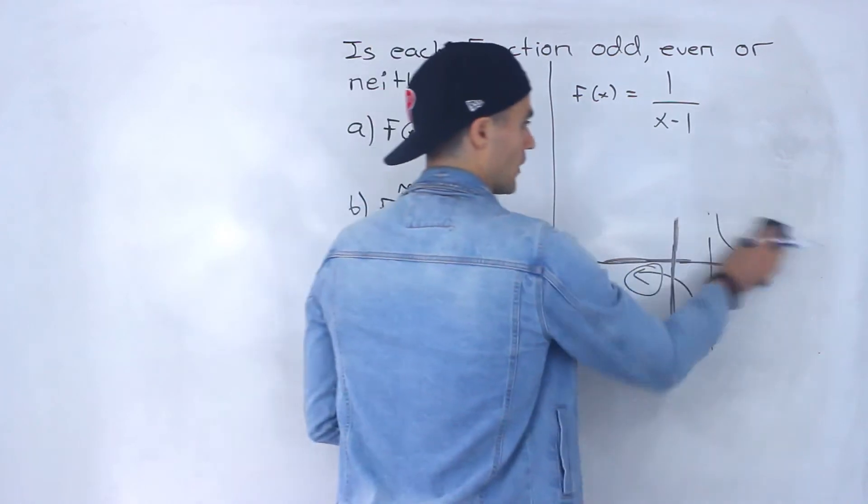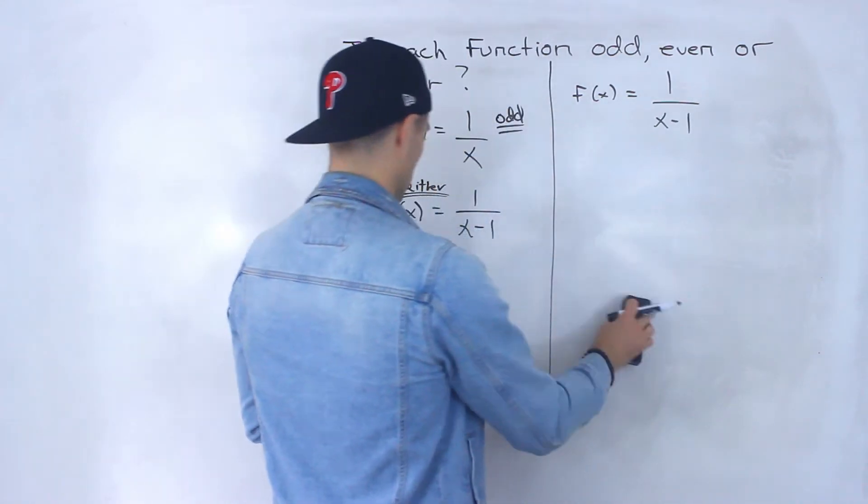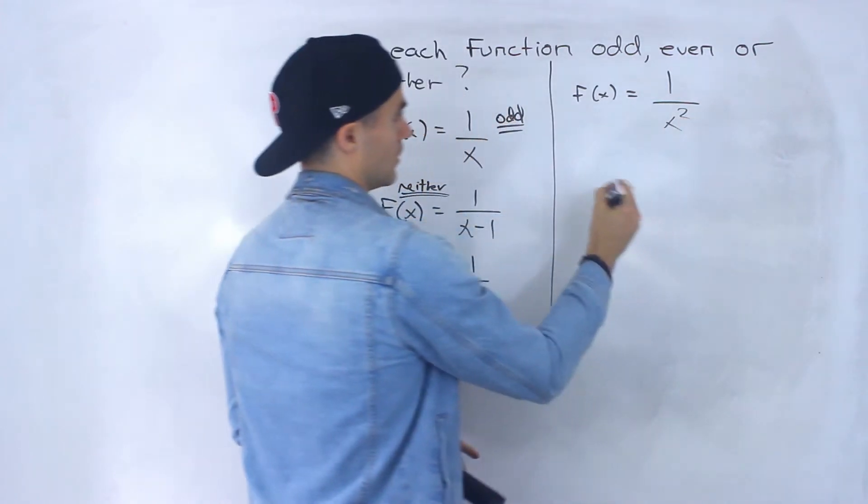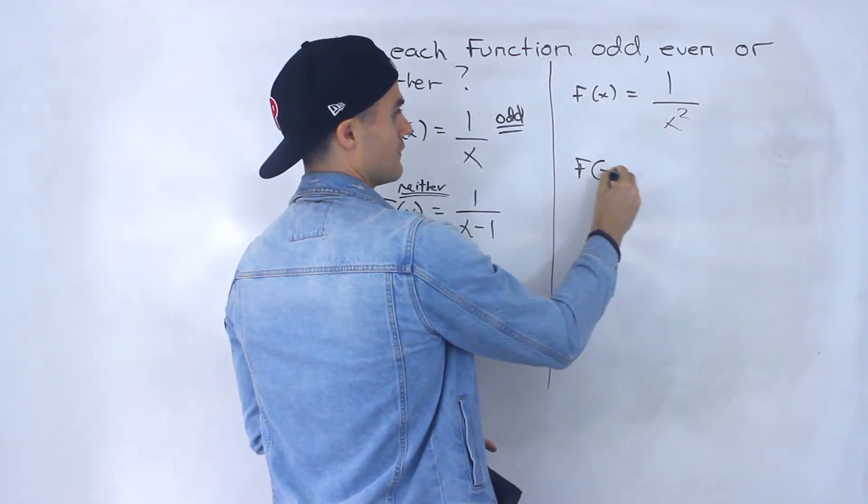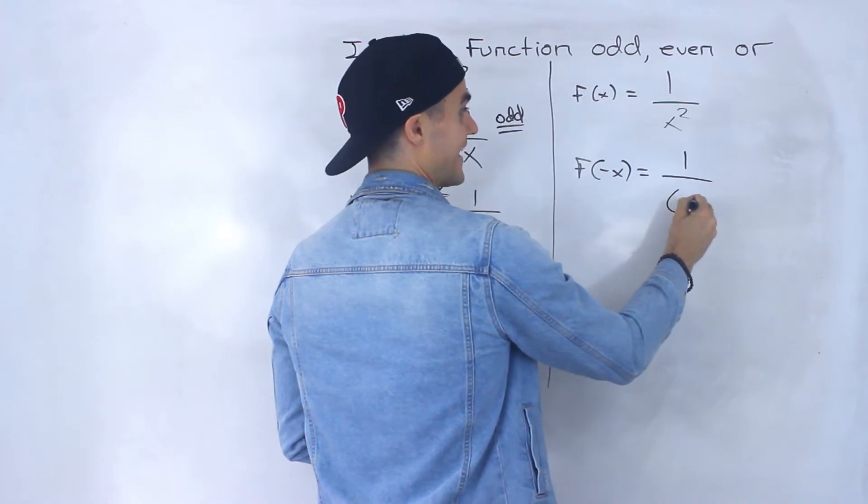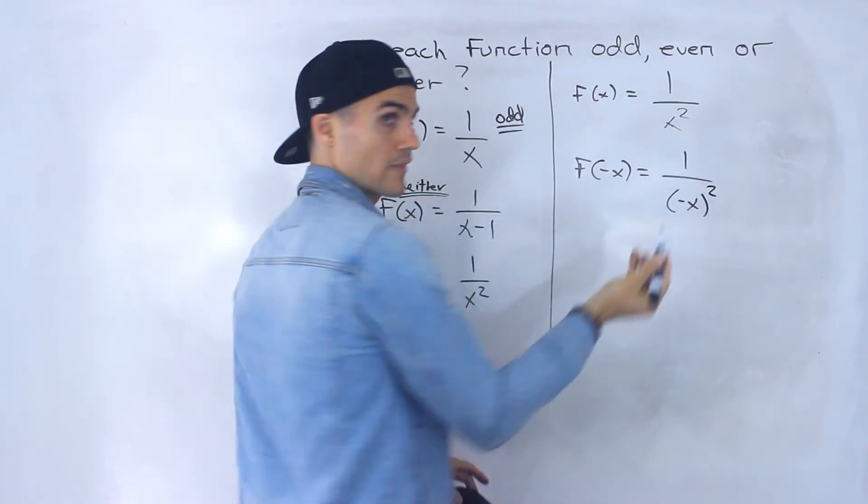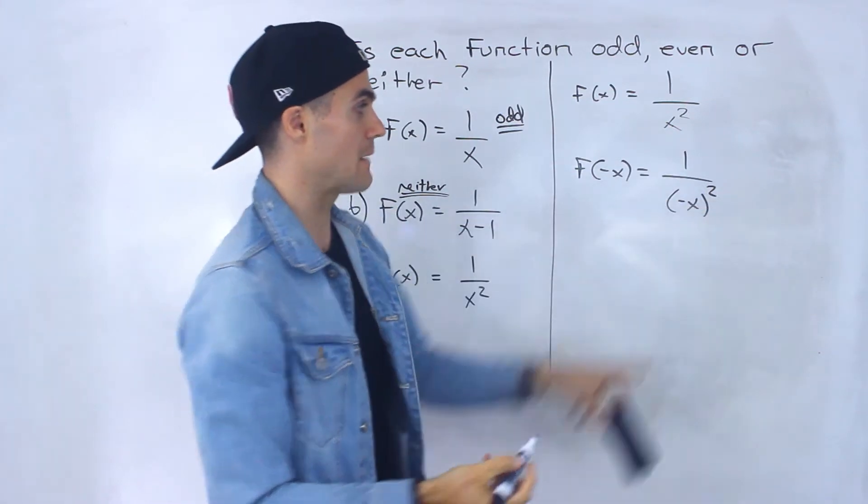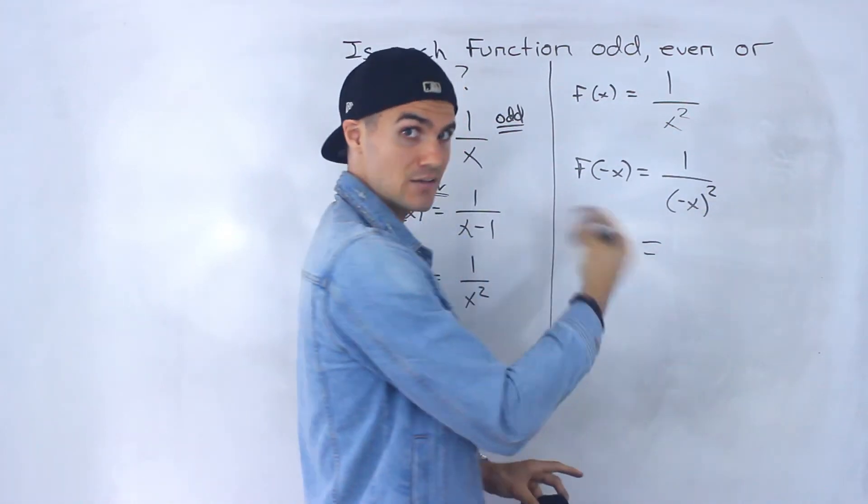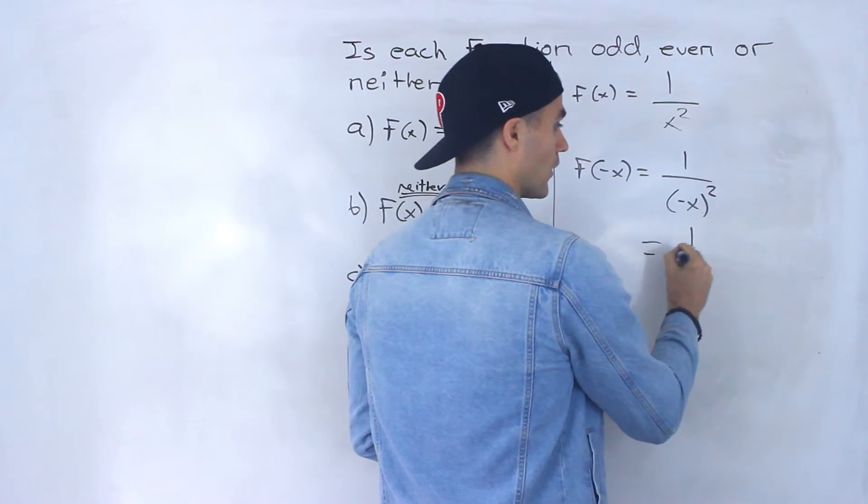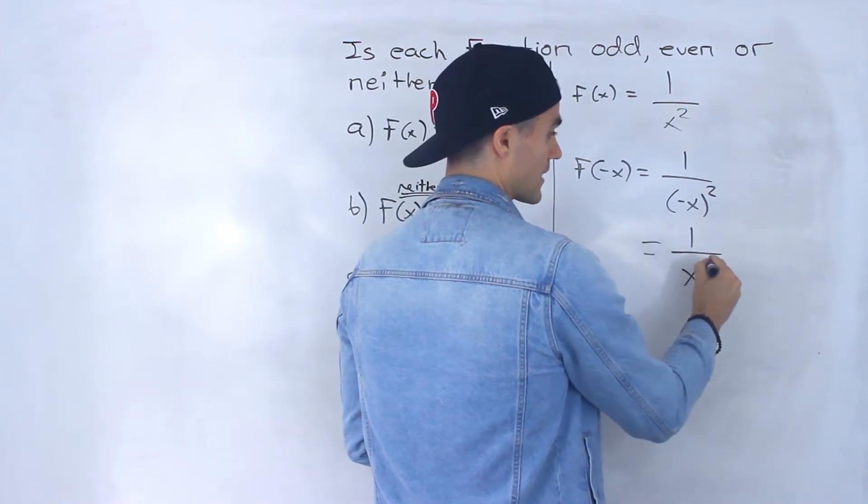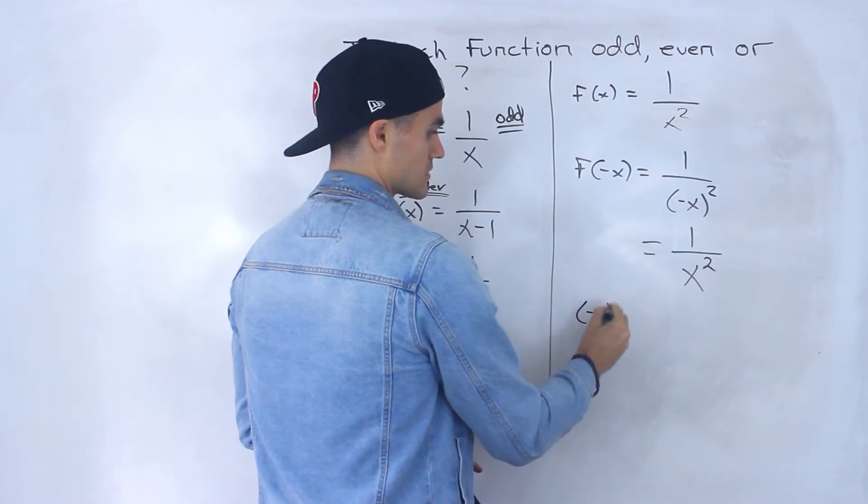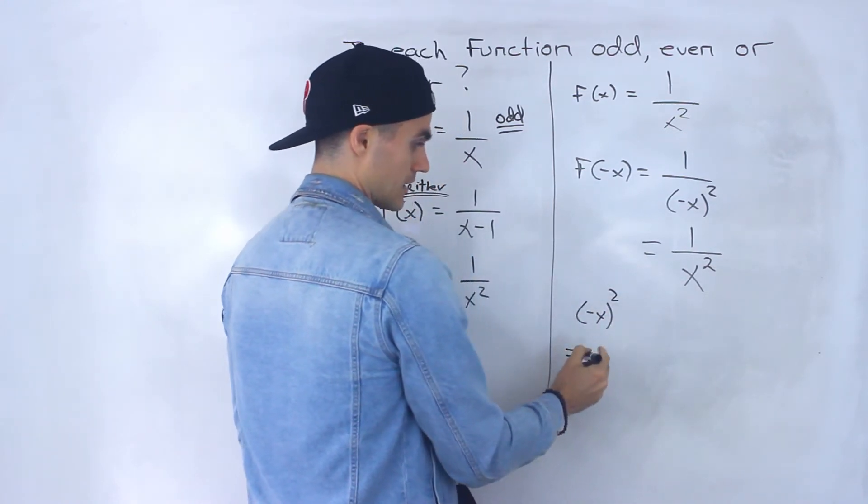And then finally, what about 1 over x squared? Well, f of negative x, we're going to plug in what? Negative x for that x value, you've got to put it in brackets. And then negative x to the power of any even exponent, it's going to be 1 over x to the power of that even exponent. Right? Because this negative x, if you want to show the work a little bit more, if your teacher's picky, it's like a negative 1 in front.